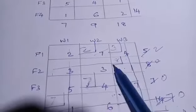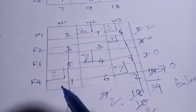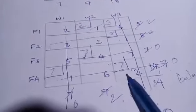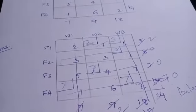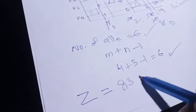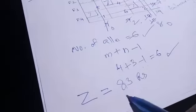Now we calculate the total cost Z: Z equals 7×2 + 4×3 + 1×8 + 4×7 + 7×1 + 7×2, which gives us 83 rupees.